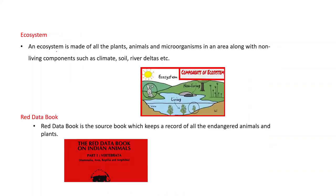Ecosystem: an ecosystem is made of all the plants, animals, and microorganisms in an area along with the non-living components such as climate, soil, river deltas, etc. Both living things and non-living components together make up the ecosystem.